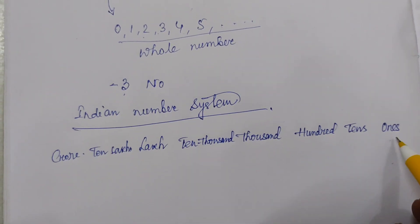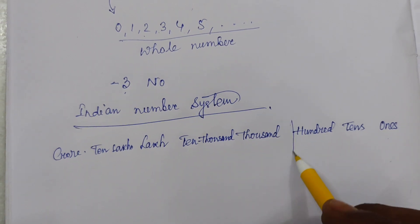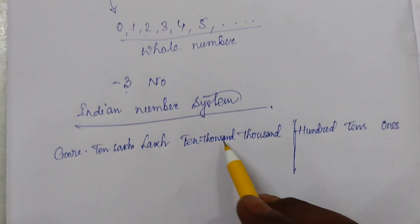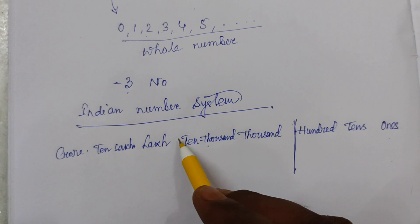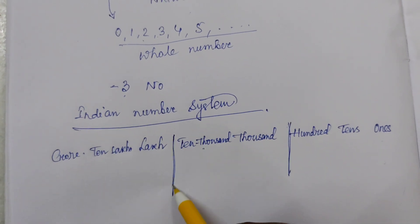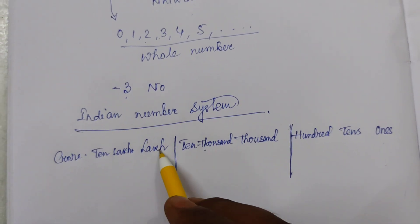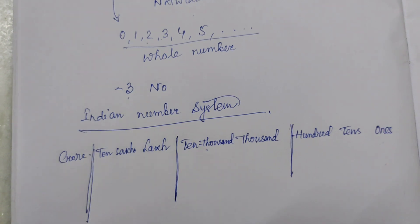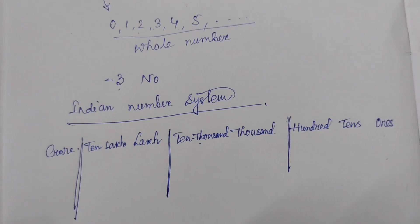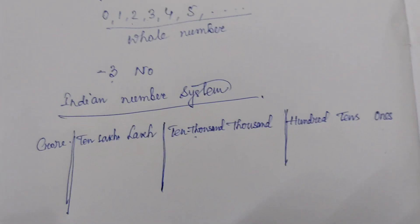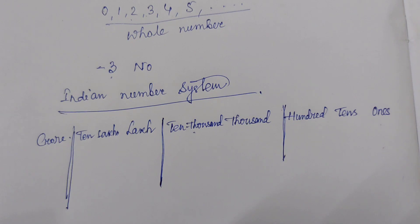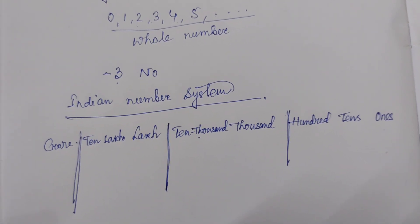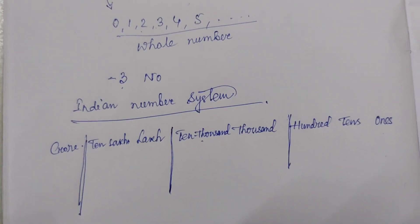Ones, tens, hundreds — that is one group. Next is thousands and ten thousands — that is another group. Then lakhs and ten lakhs — this is another group. So why do we need that? We need it to represent a number.